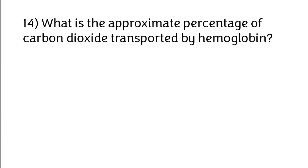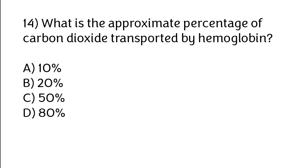What is the approximate percentage of carbon dioxide transported by hemoglobin? Options: 10%, 20%, 50%, 80%. The correct answer is Option B: 20%.